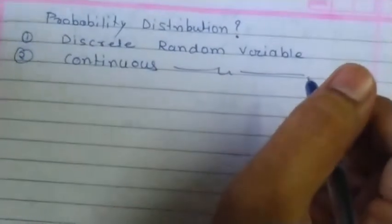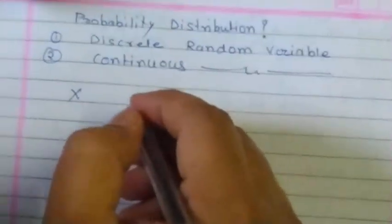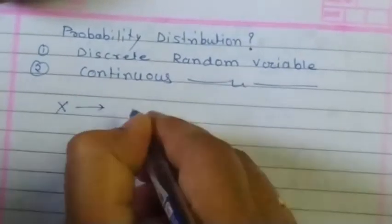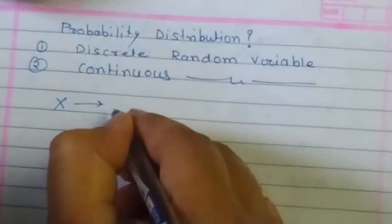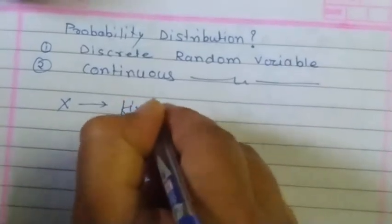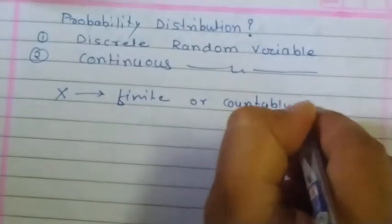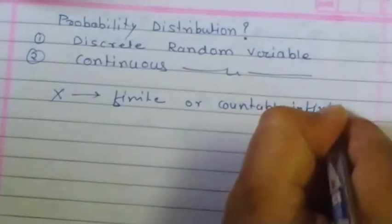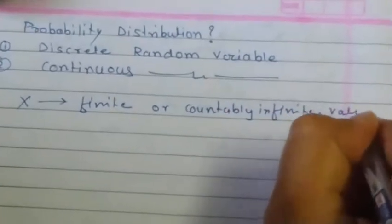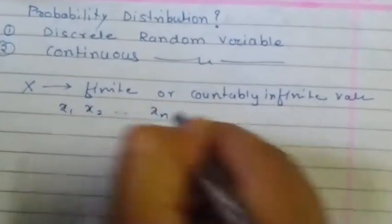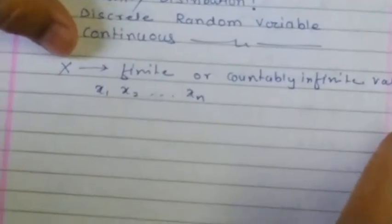Now, what is a discrete random variable? Let capital X be a random variable. If X takes values which are finite or countably infinite — say X1, X2, and so on — then X is called a discrete random variable.